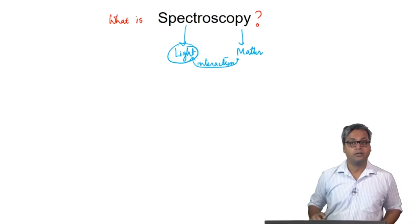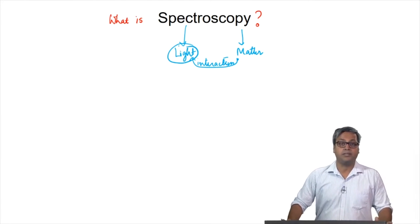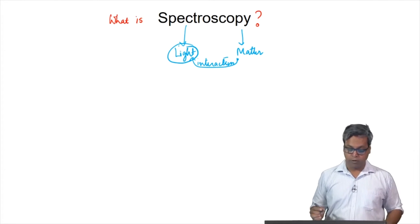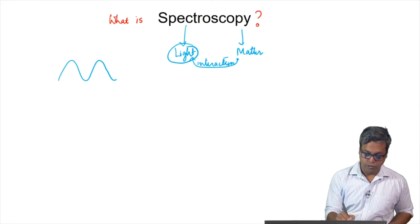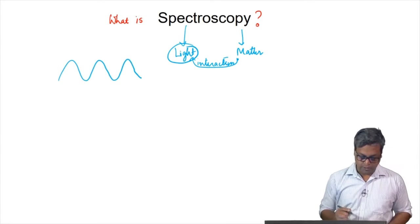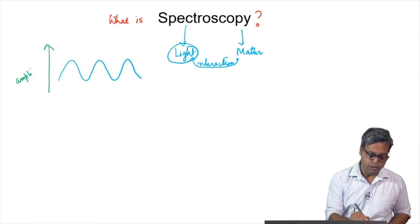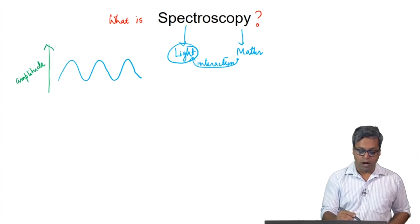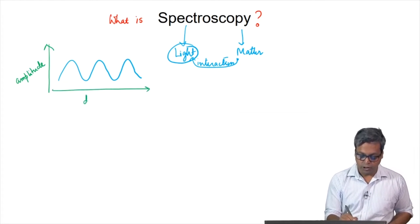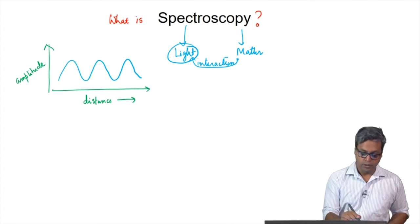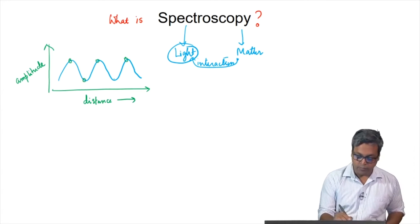First let us focus on light. Because we have light and matter, we would ask what is light? Light is an electromagnetic wave which oscillates in space. Because we have talked about a wave, let us draw a wave first. Now we have drawn a wave and because this is a plot, let us try to label the axes. On the y-axis, we are showing the amplitude — that means it tells us how large or small is the wave. On the x-axis, we are showing the distance traveled by the wave. If you look into the wave, we will see that there are several repeating points where the wave has maximum amplitude, and also there are several points where the wave has minimum amplitude.